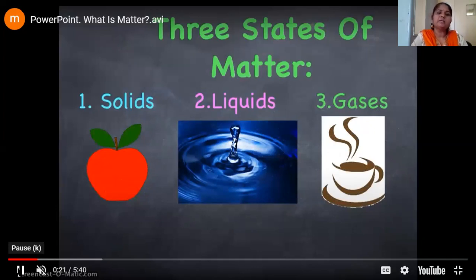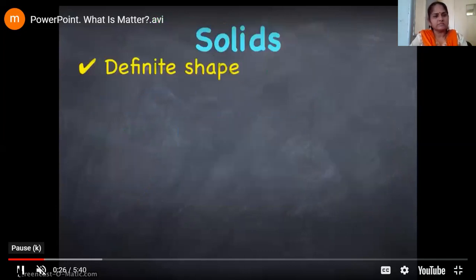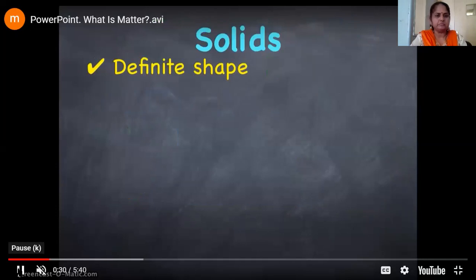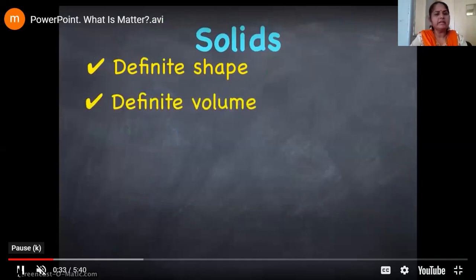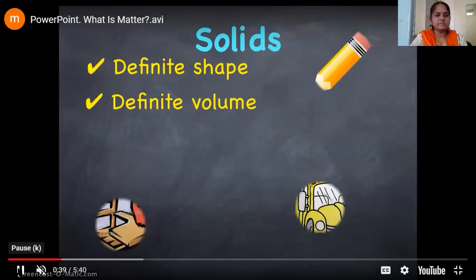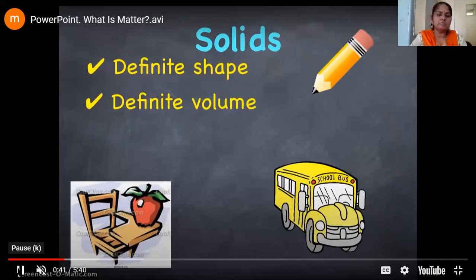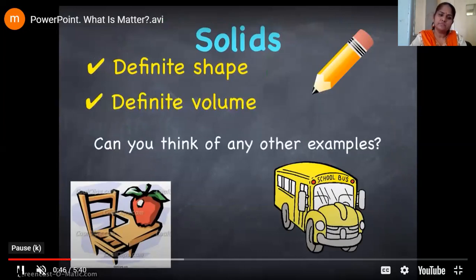Now we will see properties of solid, liquid, and gases. First we will see solids. Solids have a definite shape and a definite volume. We can see many examples in our surroundings — chair, apple, school bus, pencil, and many more you can think of and list out.